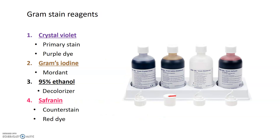To perform a gram stain, you need several reagents to differentiate between gram positive and gram negative cells. The first reagent is the primary stain called crystal violet — a dark purple, almost indigo bluish dye. The second reagent is Gram's iodine, a brown solution that acts as a mordant, a chemical that fixes the stain in place. You also need a decolorizing agent — in most cases, 95% ethanol. Finally, you need a counter stain; safranin is a very common one, which is a red pinkish dye.